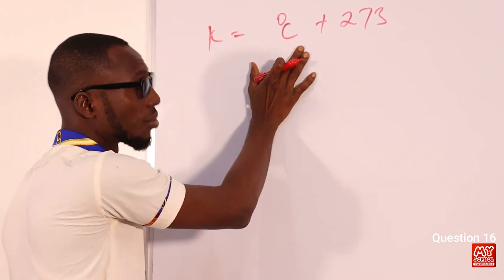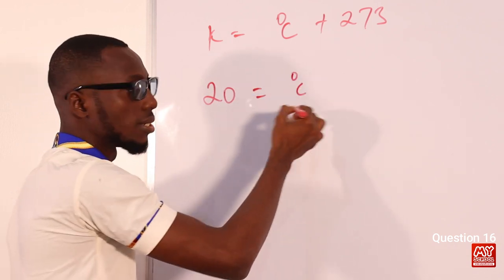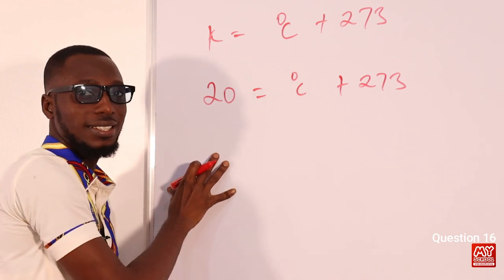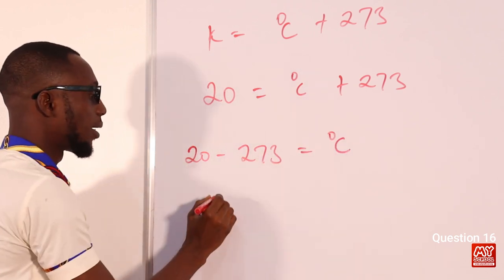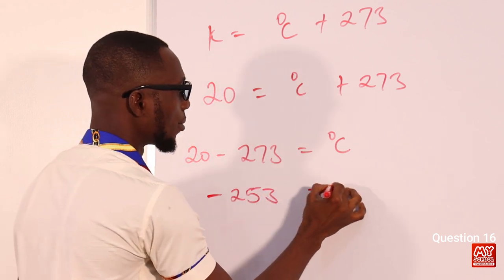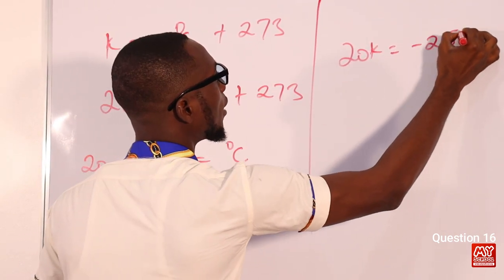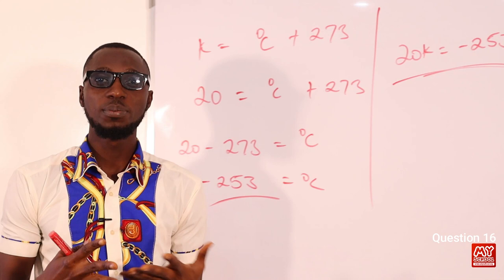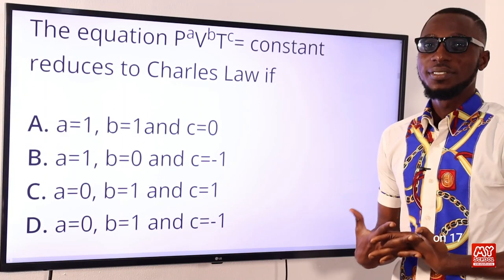This time we are moving from Kelvin to Celsius. We are given Kelvin as 20. Rearranging the formula, Celsius = Kelvin − 273, so that is 20 − 273 = −253°C. So 20 Kelvin equals −253 degrees Celsius. Looking at the options, the correct option is option A.